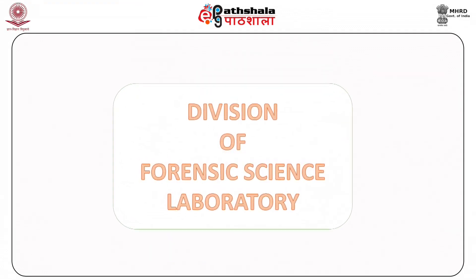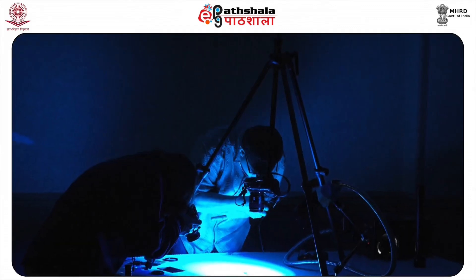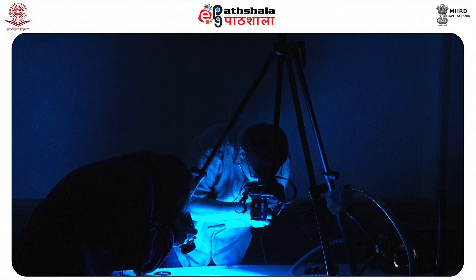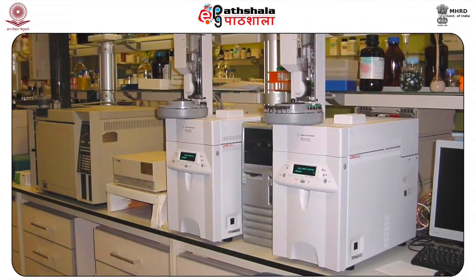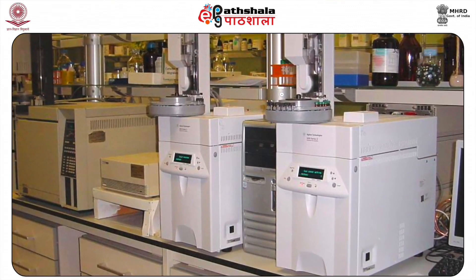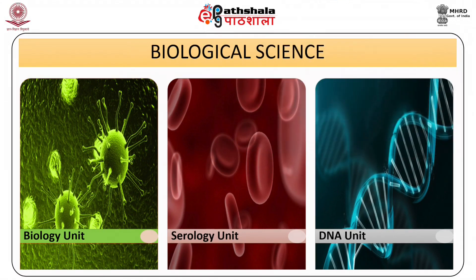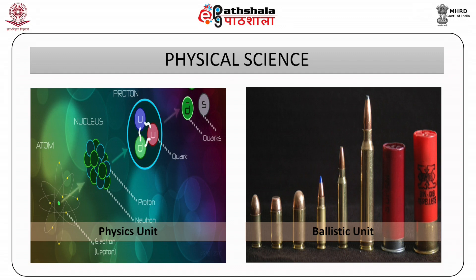Let us talk about various divisions of forensic science labs. Number one: photography, which is common for all divisions. Number two: instrumental analysis, which is also common for all other divisions. Number three: biological sciences, which includes the biology unit, serology unit, and DNA unit. Number four: physical sciences, which include the physics unit and ballistic unit.